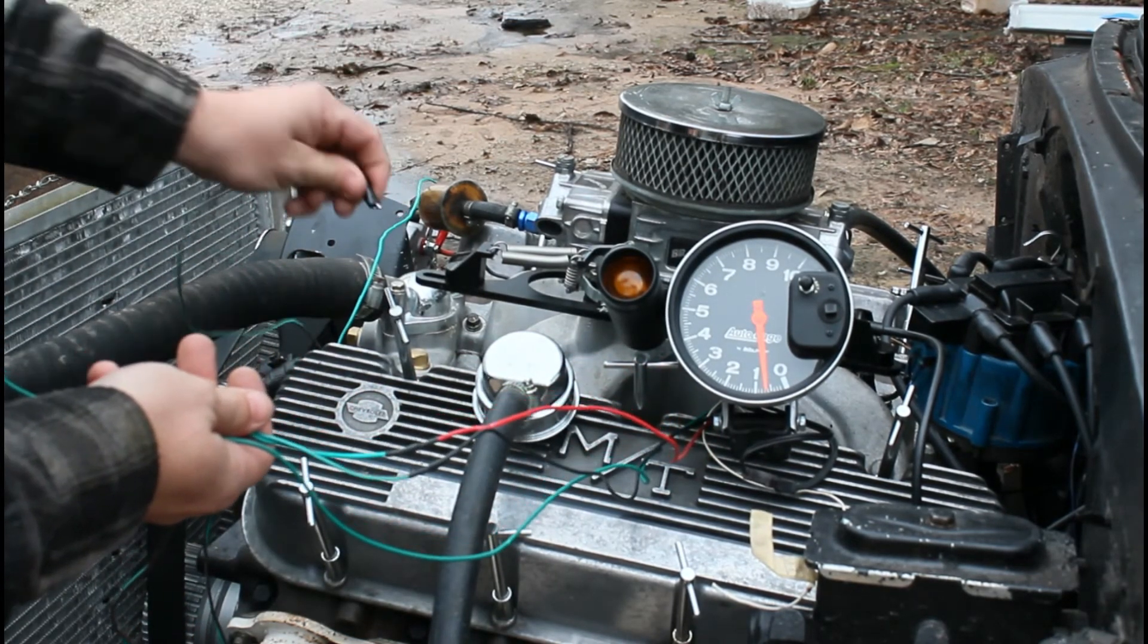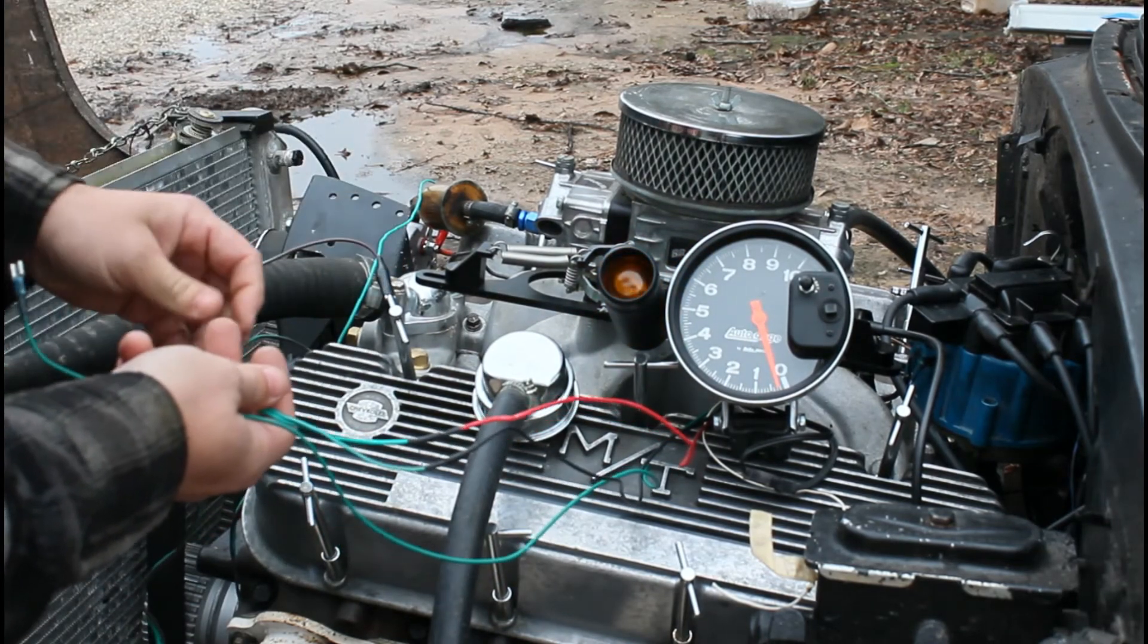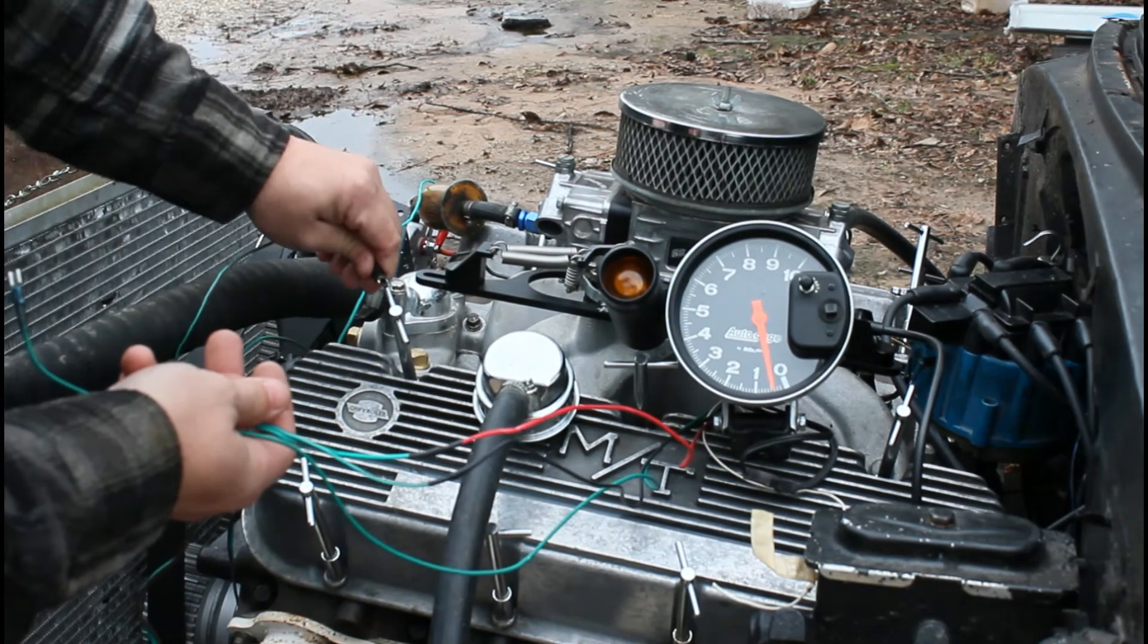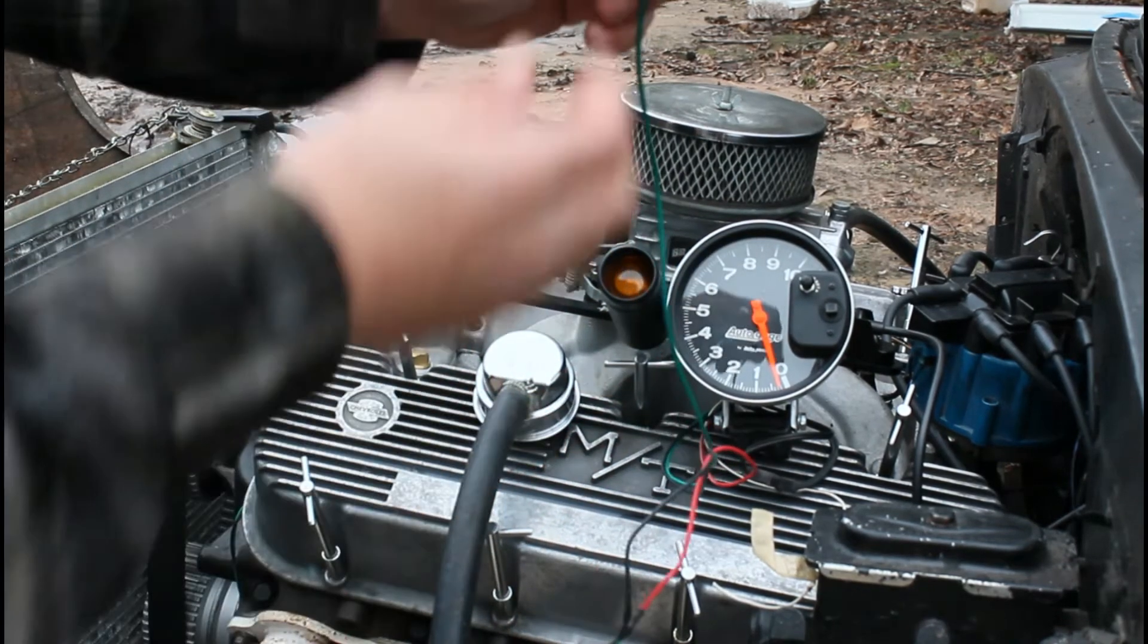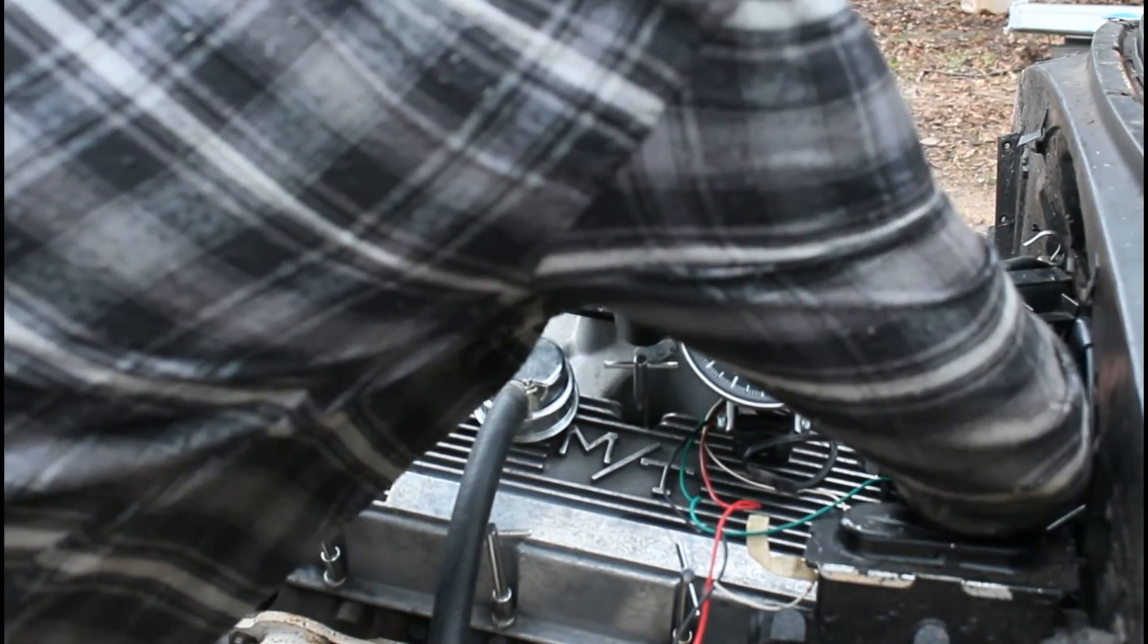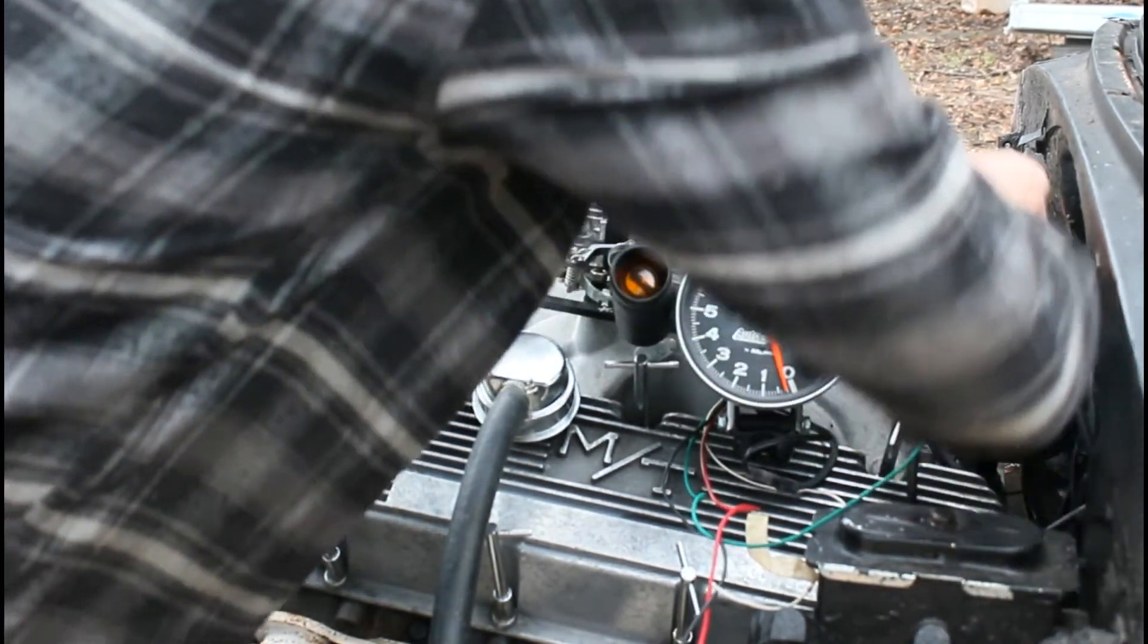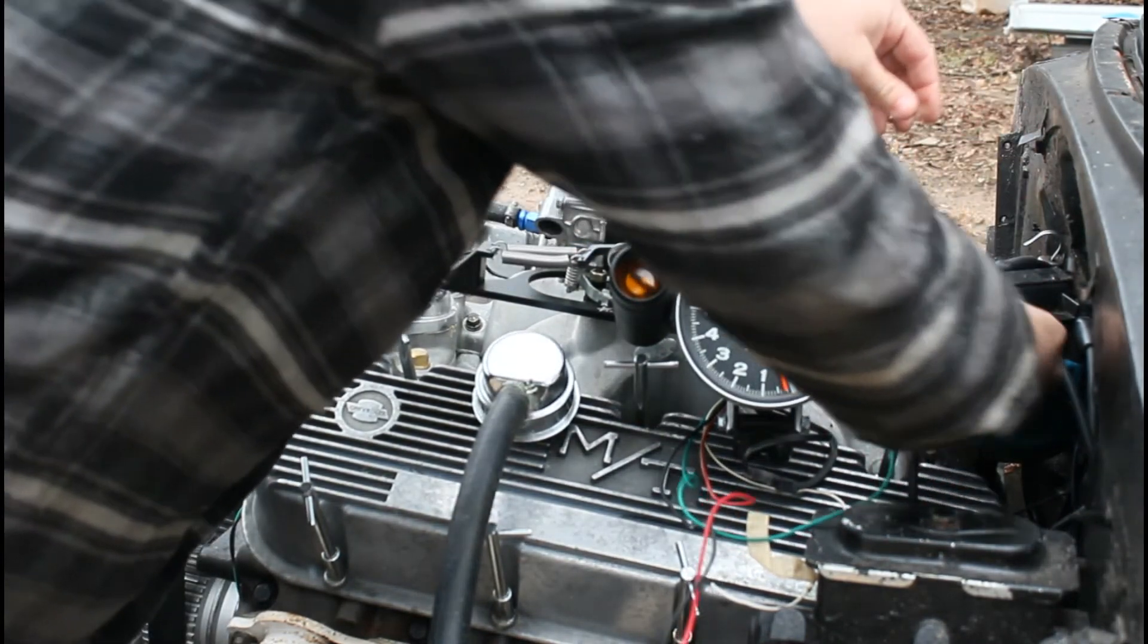And the black wire goes to a ground, so I'll use something like this. Looks pretty good. You can see the needle jumped. It's a good indication that it works. And then the green wire, I put this little crimp on it and I'll put it on the negative side of the coil. So I'm going to unplug my tack that is in the car and plug this one in.